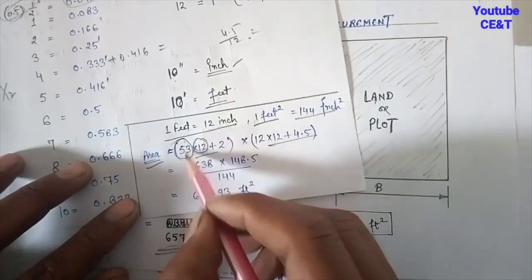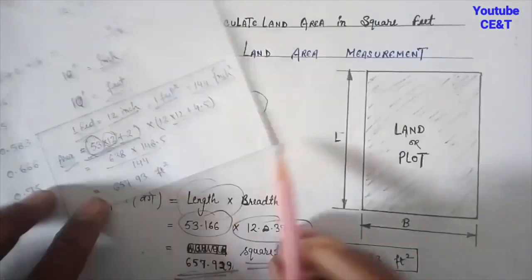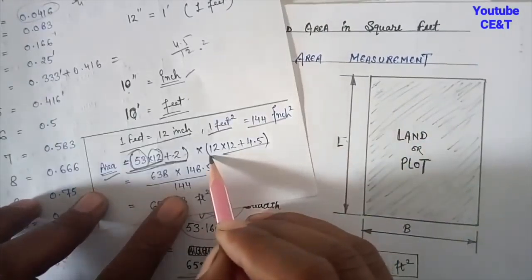It records the ownership rights of freehold properties and leasehold properties, where the lease has been granted for a term exceeding seven years.